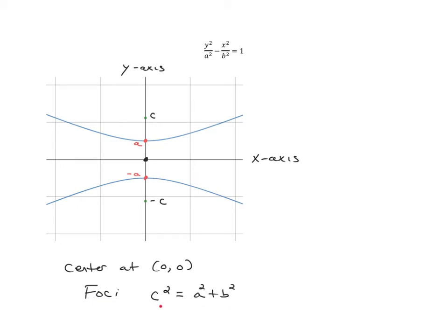It's the same equation as before because the a squared term is now under the y squared term instead of the x squared term. In this case, the transverse axis is the same as the y-axis.